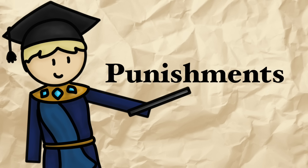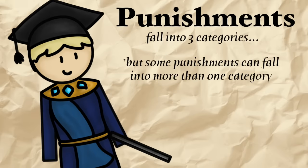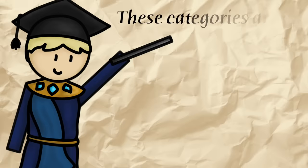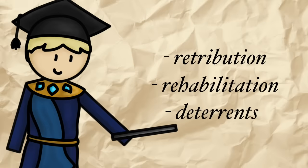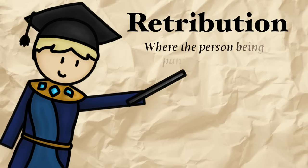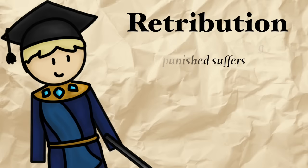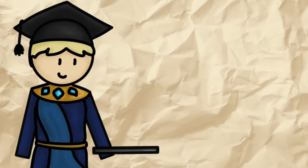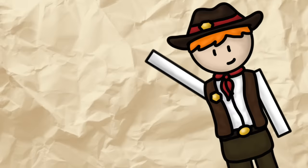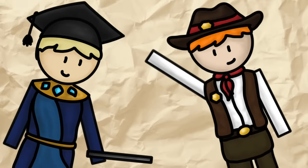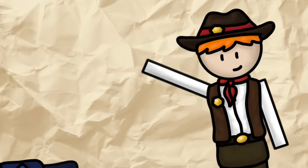Now let's look at some punishments. Punishments fall into three categories, although a single punishment can fall into more than one. These categories are retribution, rehabilitation, and deterrence. A punishment which is a form of retribution is one where the person being punished suffers — it's essentially the justice system getting revenge for what they've done. A simple example: if you punch someone in the face, you're punished by being punched in the face. But retribution doesn't always have to be equal — you might punch someone and your punishment could be getting hit in the face with a chair. That's still retribution.